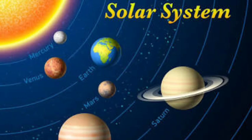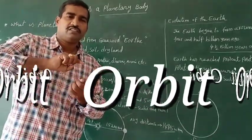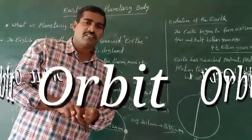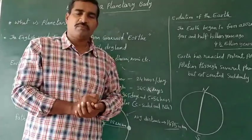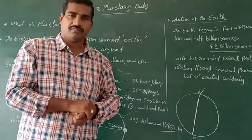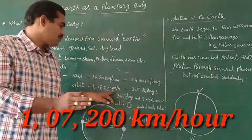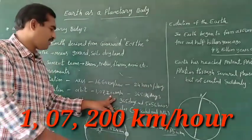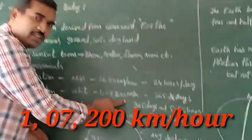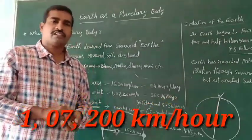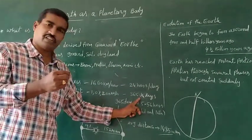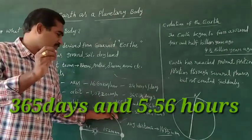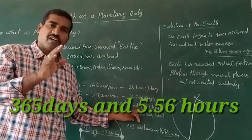Earth revolves around the sun — this is known as revolution. While revolving around the sun, it creates its own path, known as orbit. The speed during revolution is one lakh seven thousand two hundred kilometers per hour. Earth takes 365 days and one fourth day to complete its revolution — specifically 365 days and 5.56 hours.